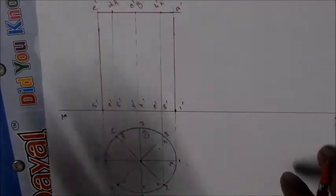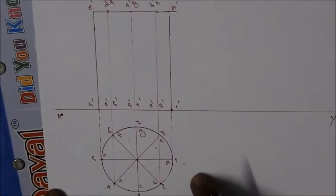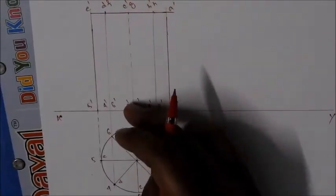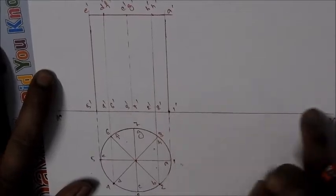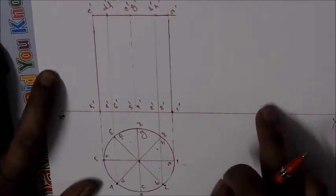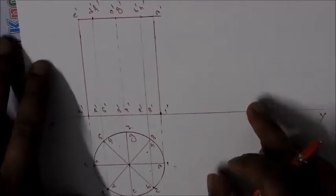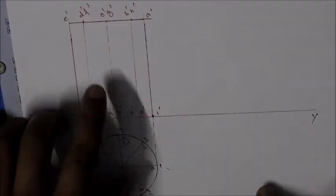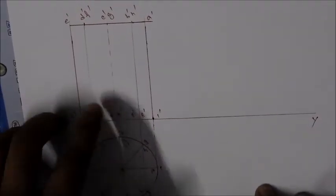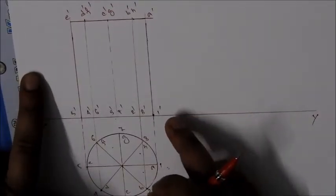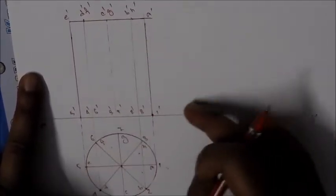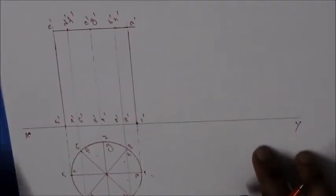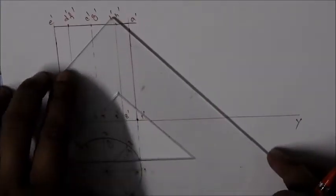So this is the simple projection complete. The axis is parallel to the vertical plane and inclined to the horizontal plane at 45 degrees. First, if we set the base at 45 degrees, then this axis is automatically at 45 degrees.